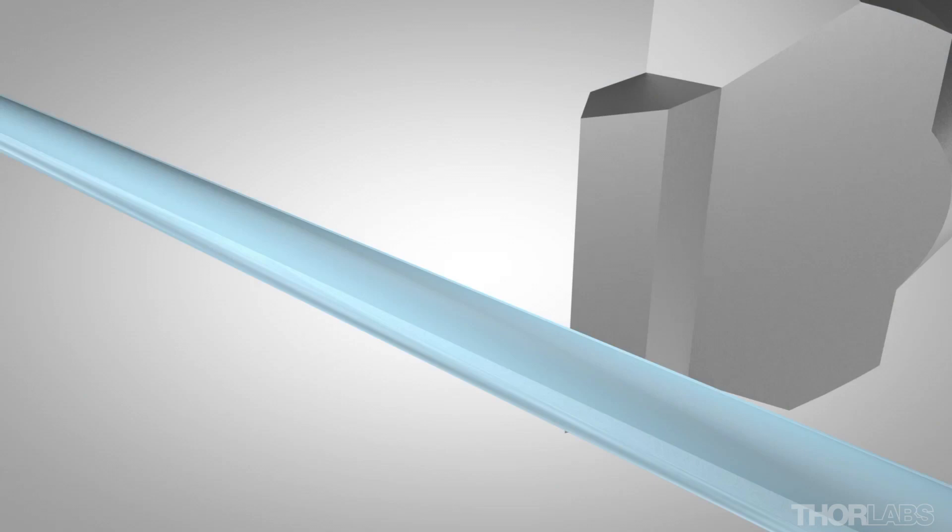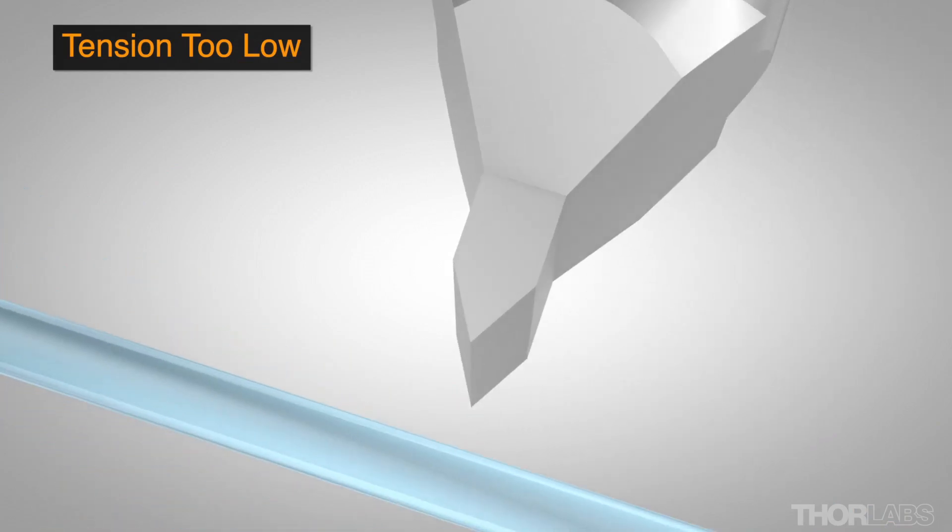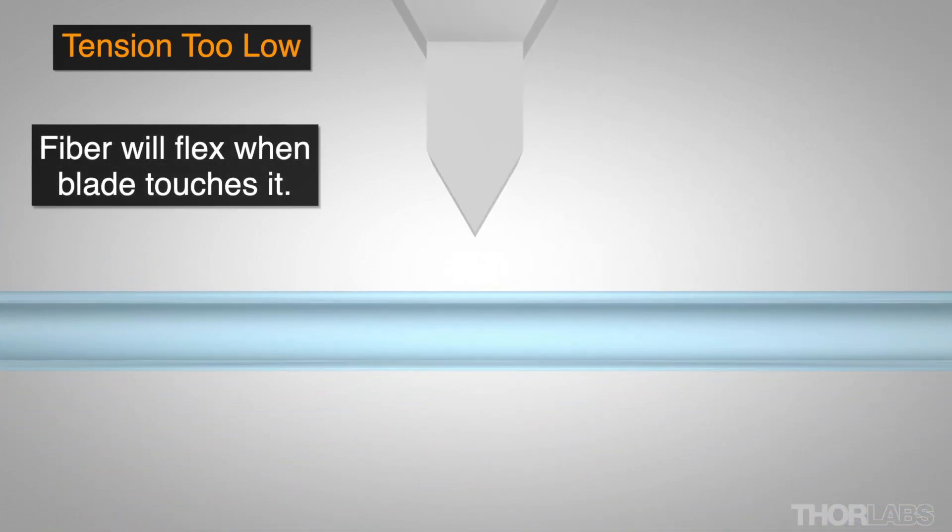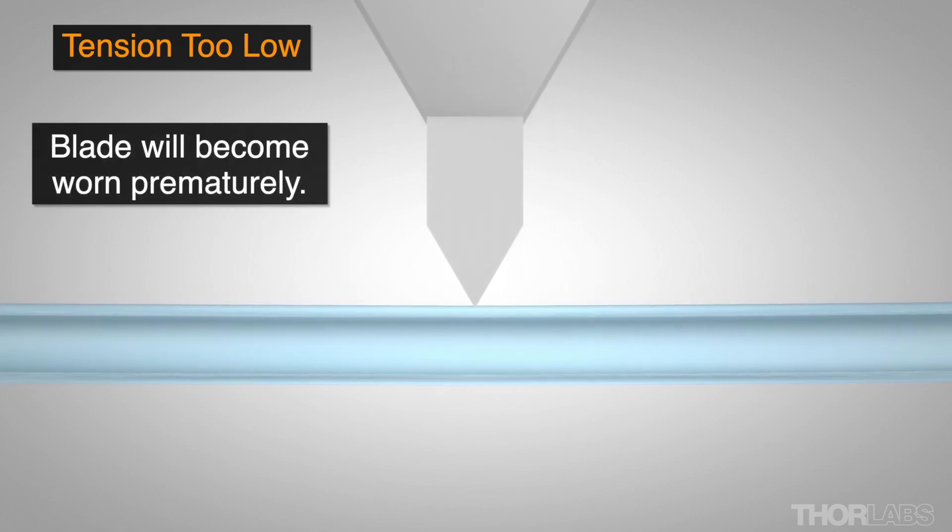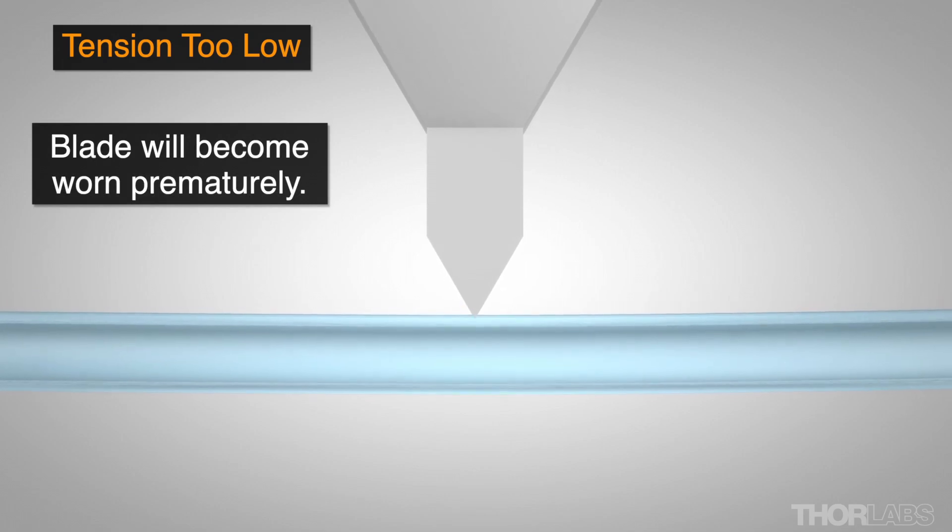However, if the cleave conditions are not optimized for a specific fiber type, for example the tension is set too low, the fiber may flex rather than cleave when the blade touches it. This will result in lateral stress being applied to the blade, and it will become dulled or damaged prematurely.